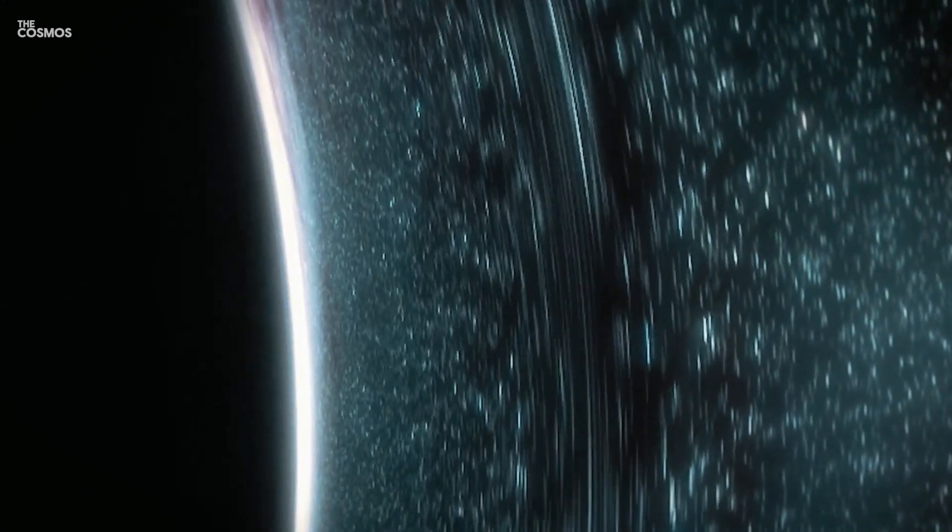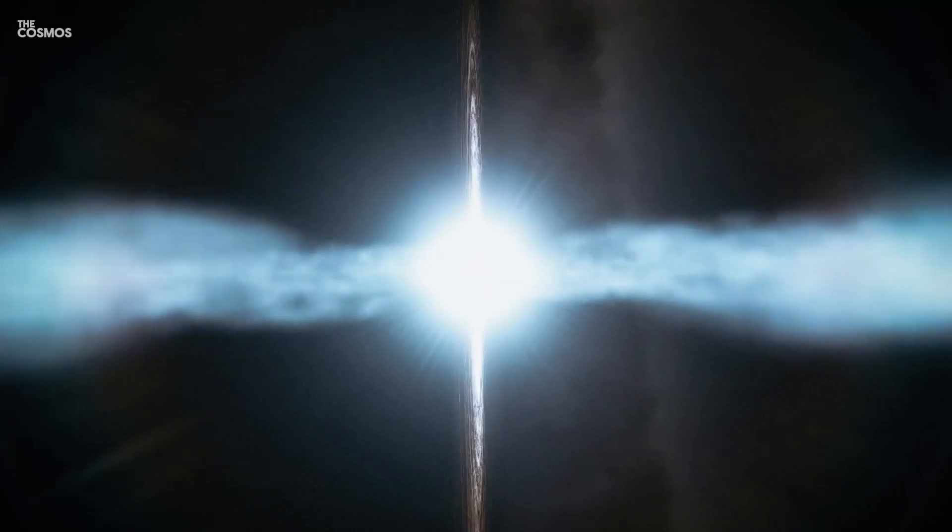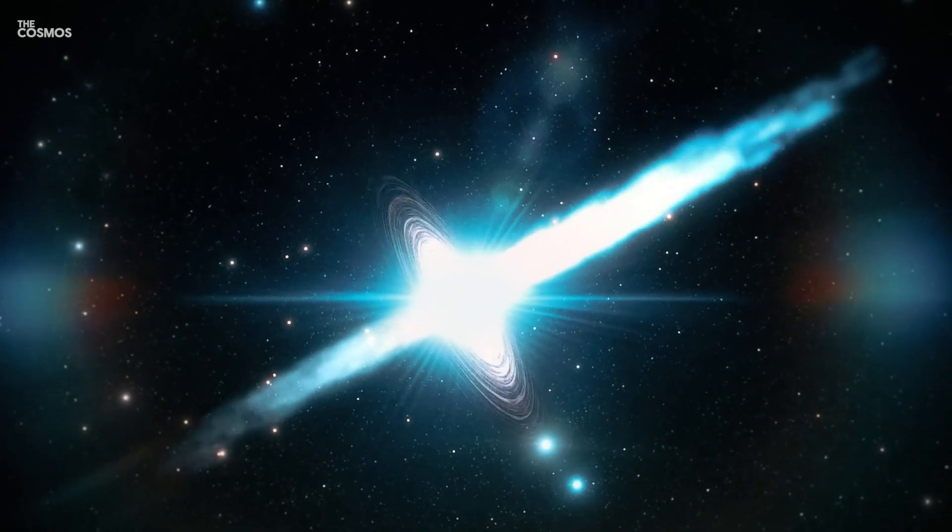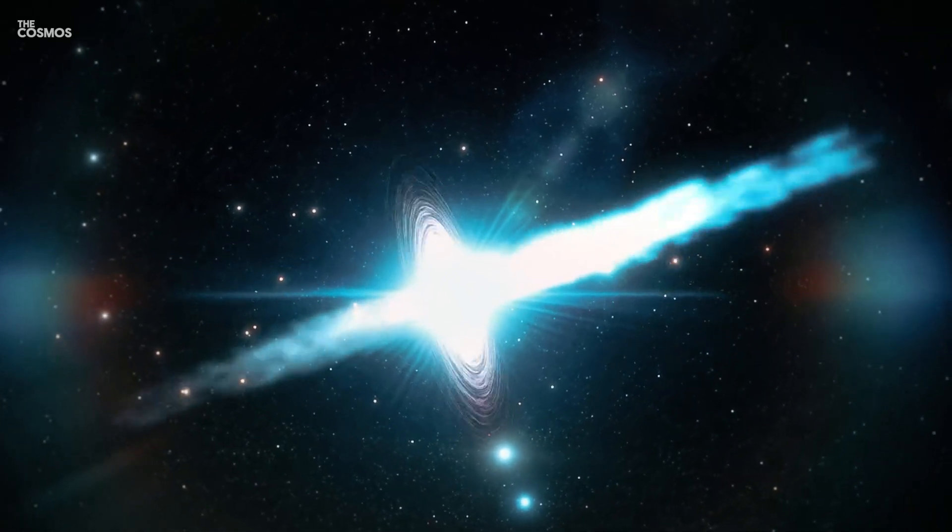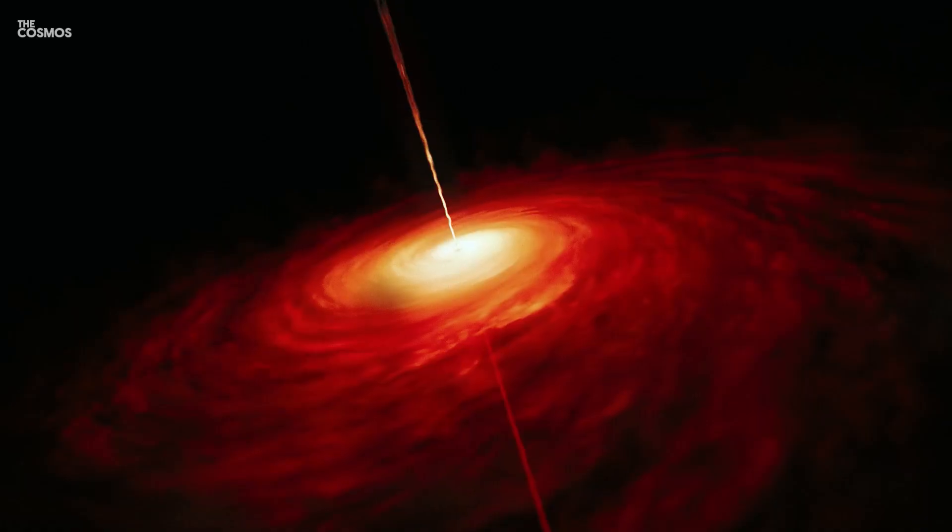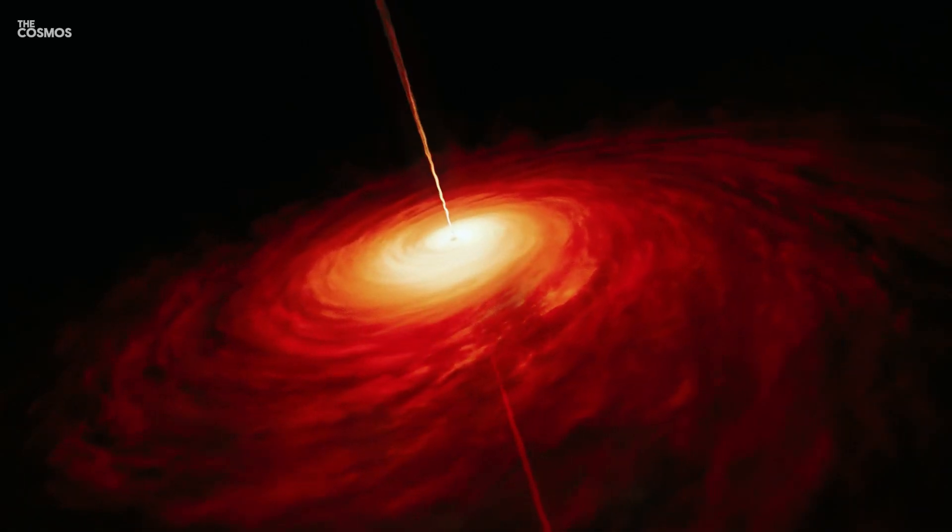The intense spin can also create jets of particles that shoot out from the black hole's poles at nearly the speed of light, reaching across vast distances in the universe. These relativistic jets can impact the formation of stars and evolution of galaxies, demonstrating the far-reaching influence of black holes.